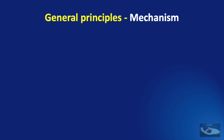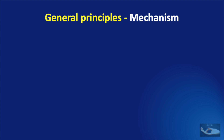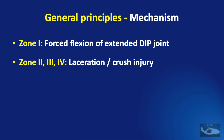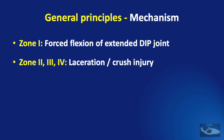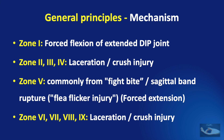In zone 1, forced flexion of the extended DIP joint is the cause for injury. In zones 2, 3, and 4, a laceration or crush injury is the commonest cause. In zone 5, this is commonly called the fight bite — when a person punches another person in the face, the knuckle may hit the opponent's teeth, causing injury to the extensor tendon in zone 5. It is also possible to get a sagittal band rupture, otherwise called a flea flicker injury — that is, forced extension of a flexed finger. In zones 6, 7, 8, and 9, laceration or crush injury is the commonest cause.